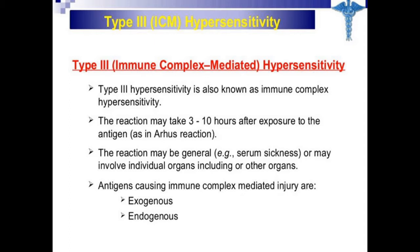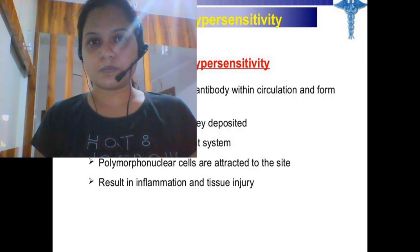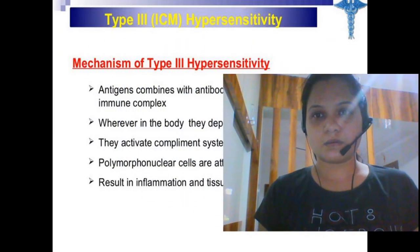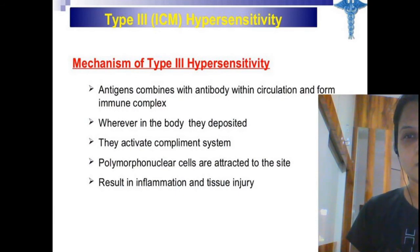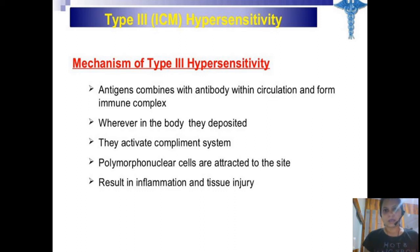Antigens causing immune complex-mediated injury can be exogenous or endogenous. In the mechanism, the antigen combines with the antibody within circulation to form immune complexes. Wherever in the body they get deposited, they activate the complement system, where polymorphonuclear cells are attracted to the sites, resulting in tissue injury or inflammation.